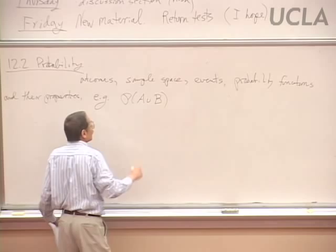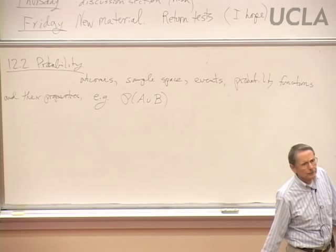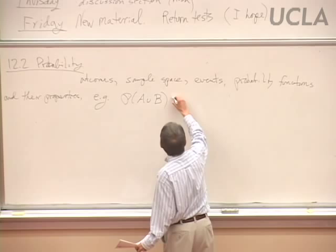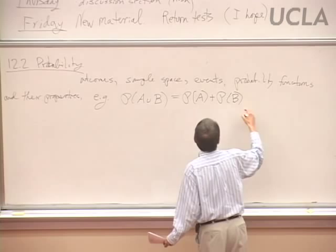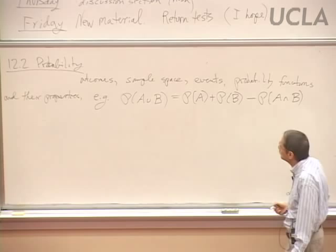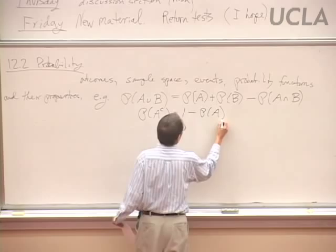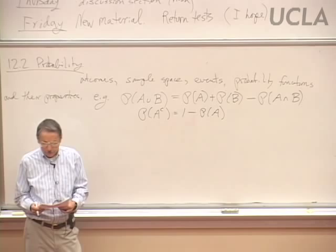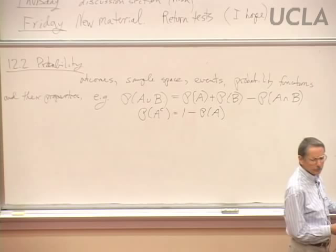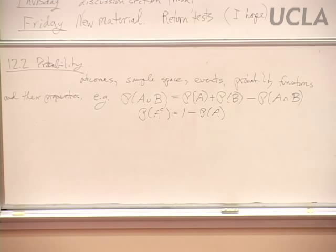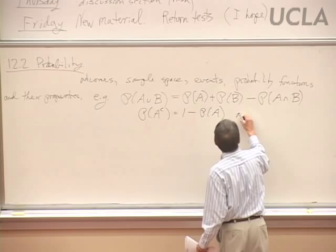For example, in doing the problems it has sometimes been useful to use the fact that for a probability function, the probability of the union of two events can be broken down as the sum of the probabilities, and then we correct for the double counting. The probability of a complement — sometimes to find the probability of an event, it's easier to look at the complement.